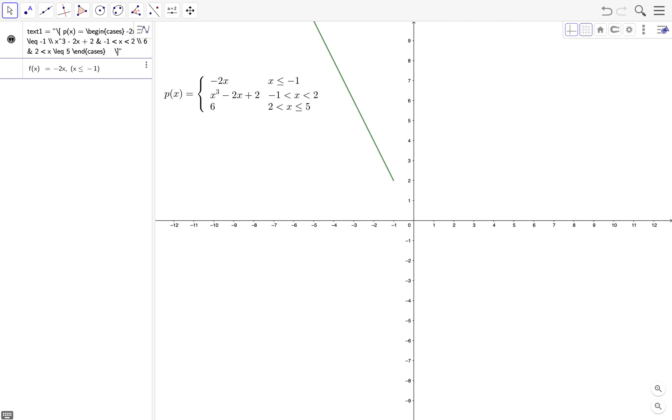When you type less than and then equal, GeoGebra automatically converts the symbols to this symbol, and then you press the entry key.